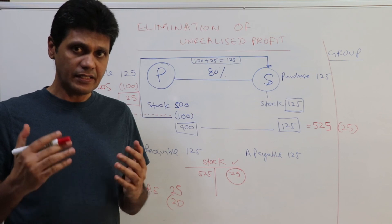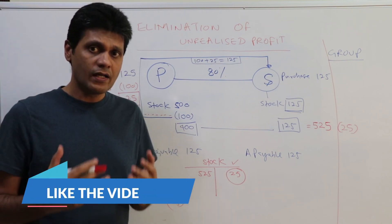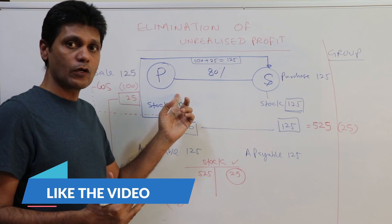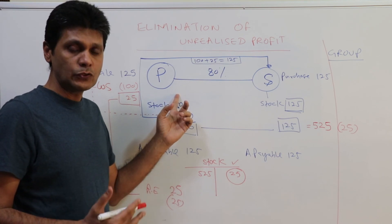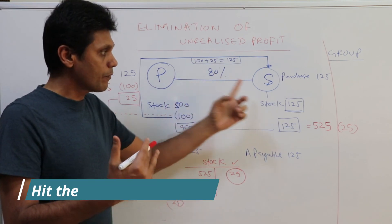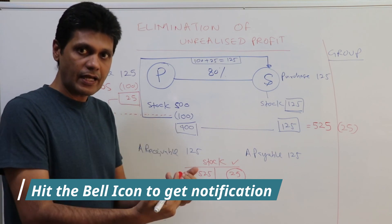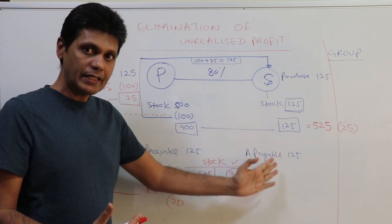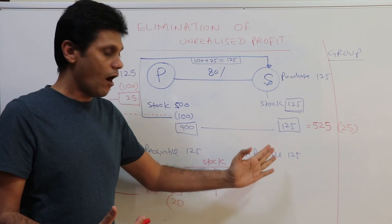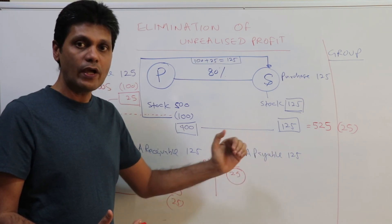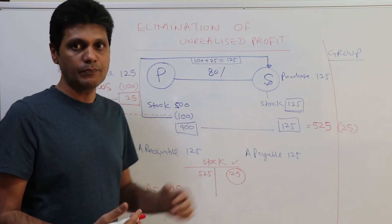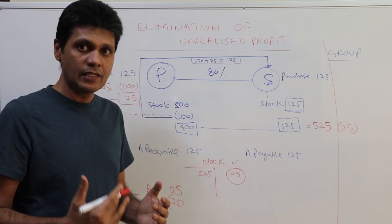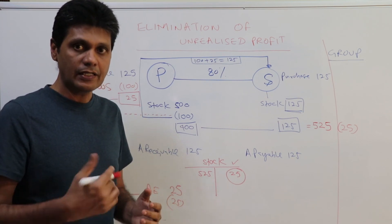Now let's look at another example where the subsidiary company has sold goods to the parent company. In that instance, the profit will be recognized and recorded by the subsidiary company. How do you eliminate the unrealized profit in that case? This is what we are going to discuss in the next session.